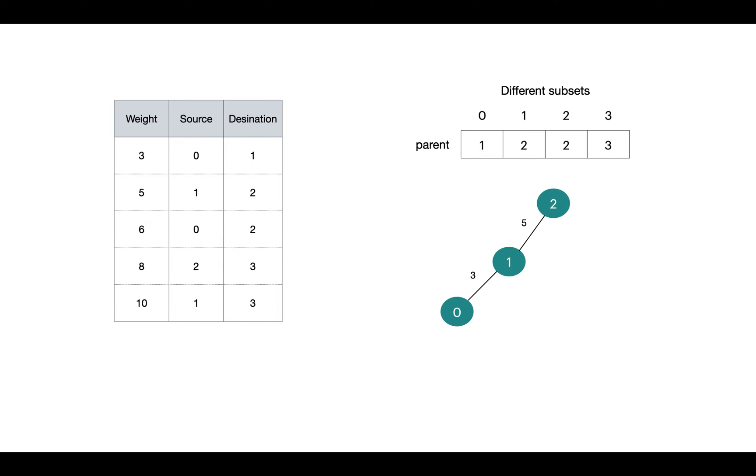Next is 2-3. 2 and 3 are in different subsets, so we do union and update the array. So at last we get these edges included, which cycle won't get created. But you can see the tree created here is skewed. To find a subset for any vertex, it needs to traverse all the vertices in the worst case.